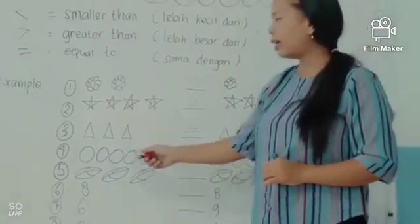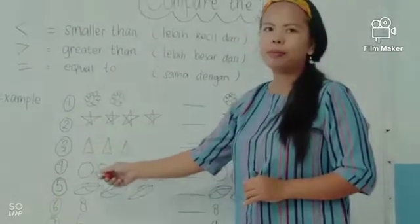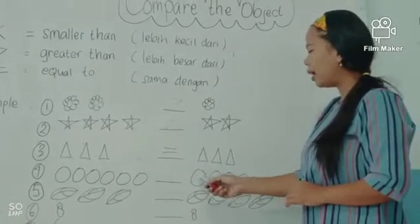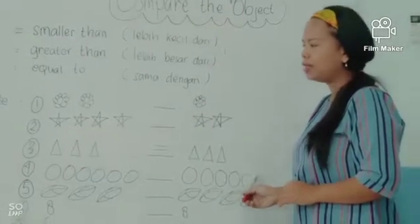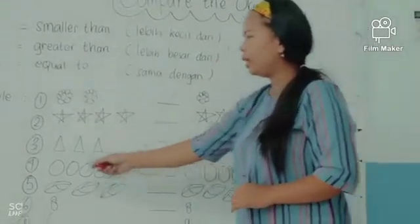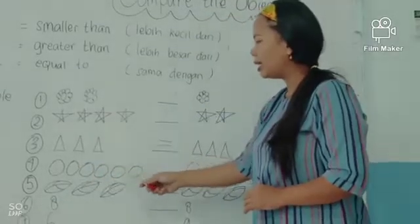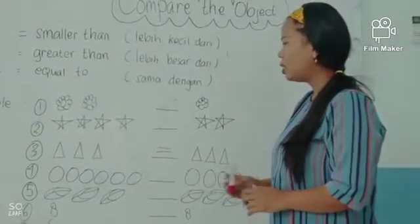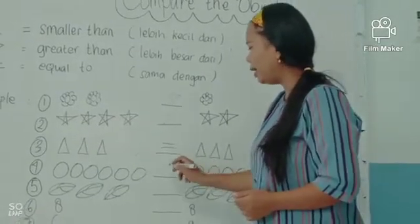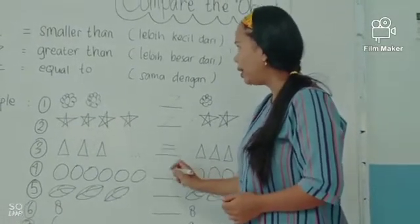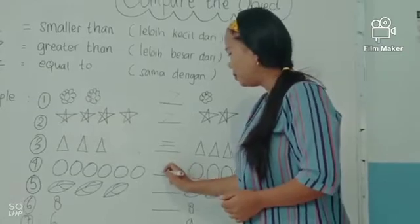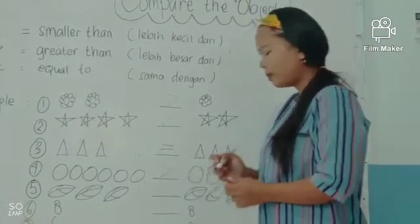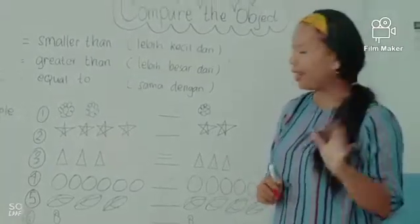Di sebelah kiri ada enam lingkaran, dan di sebelah kanan ada lima lingkaran. Yang di sebelah kiri lebih banyak daripada yang di sebelah kanan, jadi yang kita buat di sini adalah greater than. Number five.